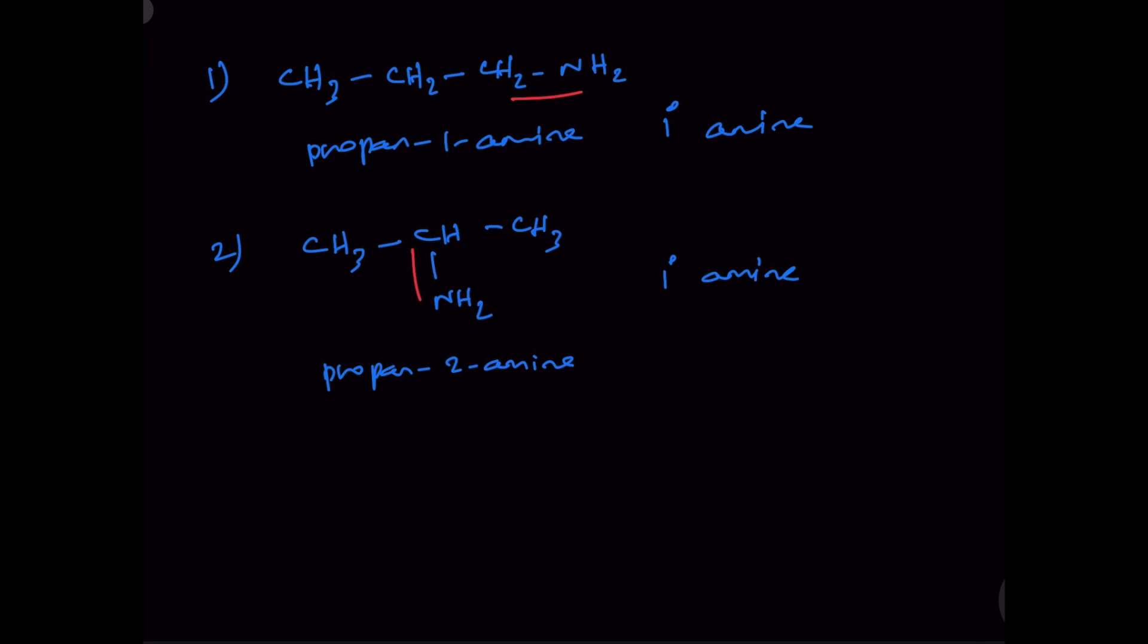Let's go to isomer 3. We can also write H3C-NH-CH2-CH3. This is N-methylethanamine, and this is a secondary amine because the nitrogen atom is connected to two carbon atoms.